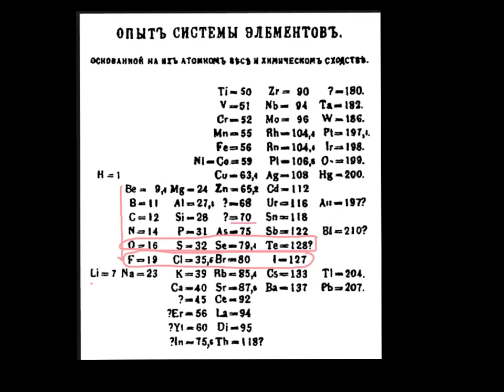But you can see where he started to make some of the connections that are in the modern periodic table. You can also see where he left some gaps, where he knew there were going to be elements that hadn't been found yet but would have those masses. And he proved to be very correct — all of these elements were later discovered and had properties almost identical to what he predicted.